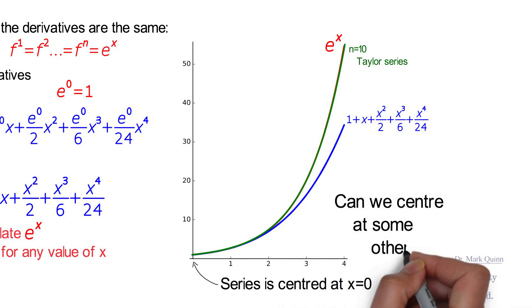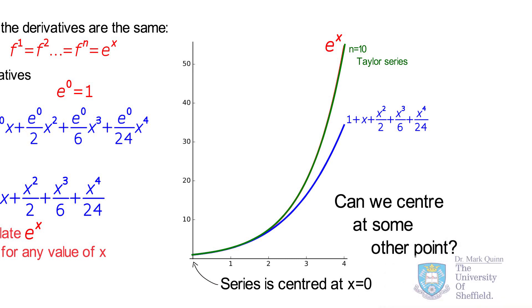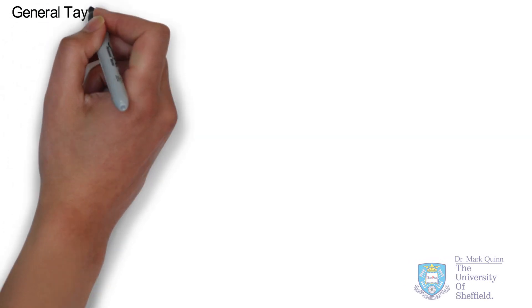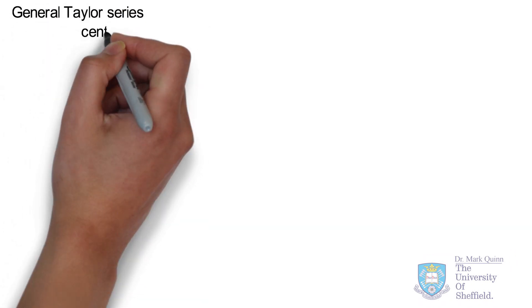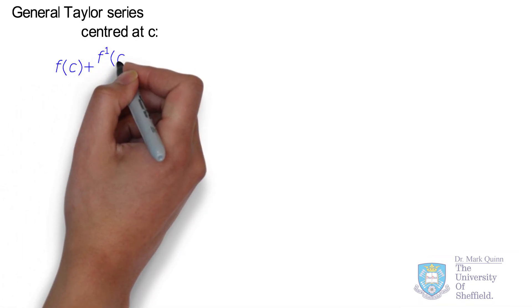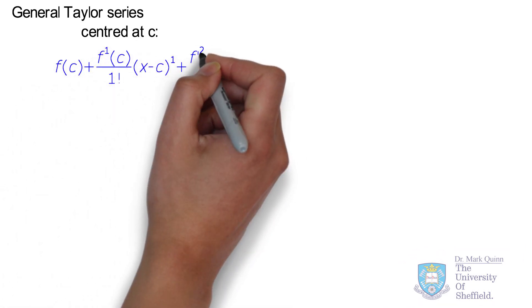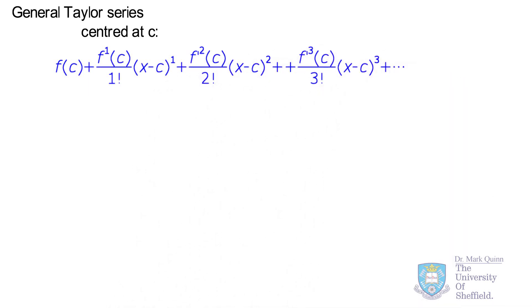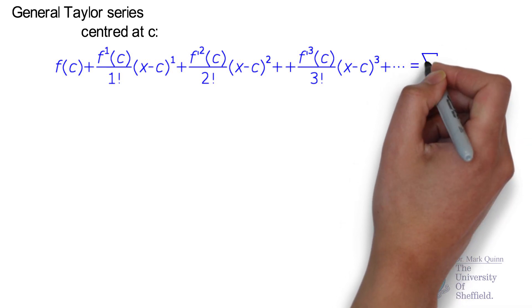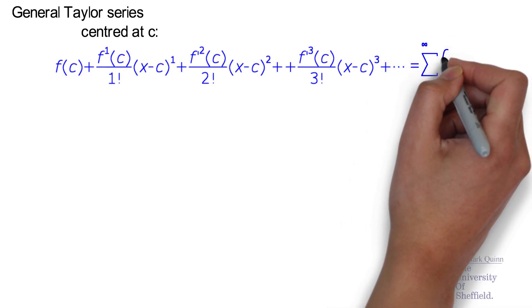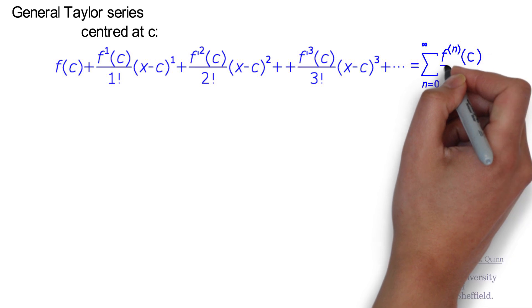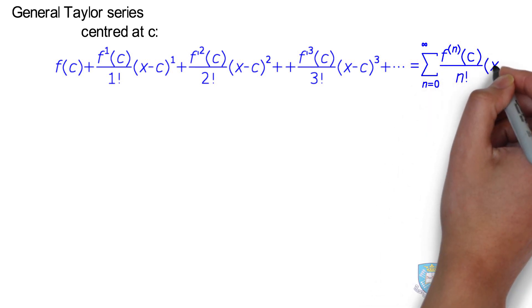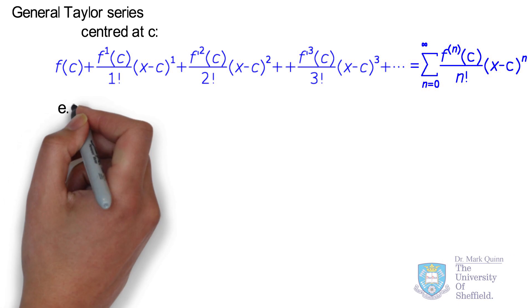Can we center the Taylor series at some other point? There are cases when a function cannot be defined as a Taylor series centered at zero — a good example is when there are no derivatives at x equal to zero, such as for the natural log of x. The area of interest may not be near zero either. In such cases we can define a Taylor series centered at some point of our choosing using a more general form, following the same notation with the introduction of a center point c.